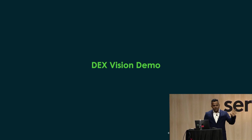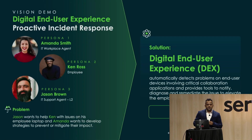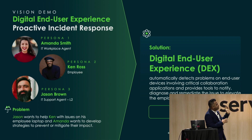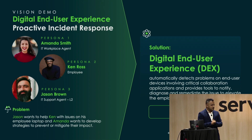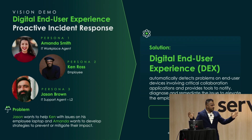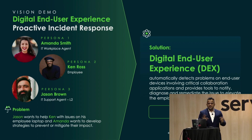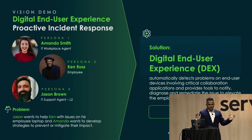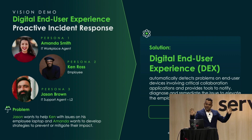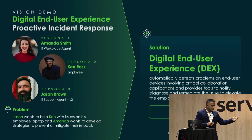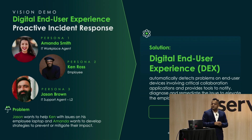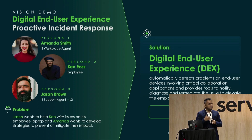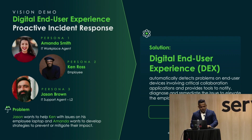Let's get to the vision demo. I want to introduce a few personas from ACME Support — a big enterprise company with 250,000 employees. First is Amanda Smith, an IT workplace agent responsible for managing and maintaining all end user devices. Next is Ken, a VIP employee. And finally, Jason Brown, an L2 support agent responsible for deep-level triage on incidents and issues associated with employees.